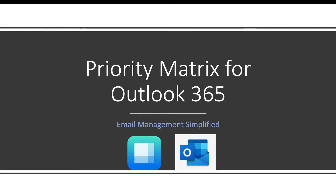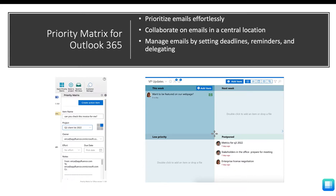Priority Matrix for Outlook 365 makes email management easy. When you use the Priority Matrix in Outlook 365 integration, you can effortlessly prioritize your emails. Prioritizing your emails will also allow you to seamlessly collaborate on them, manage these emails by setting deadlines, reminders, and delegating as needed.